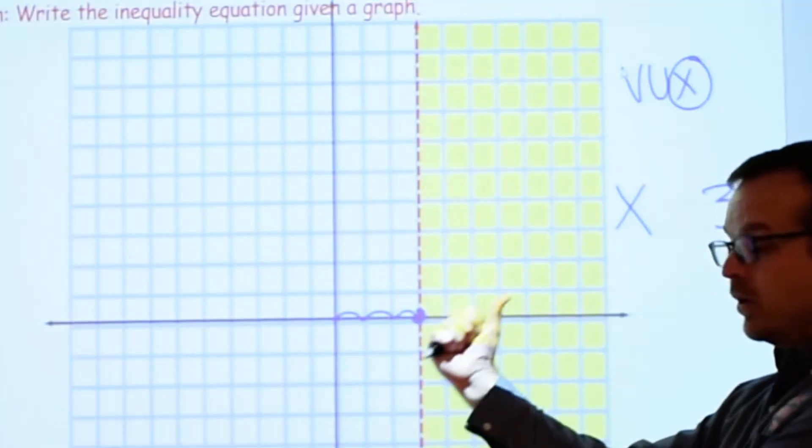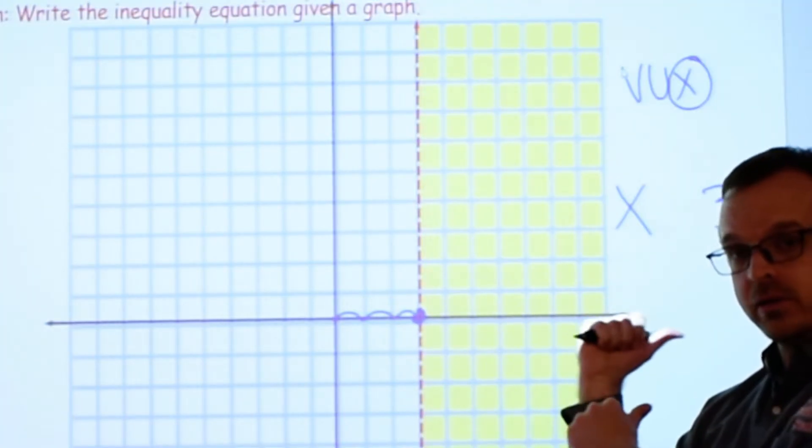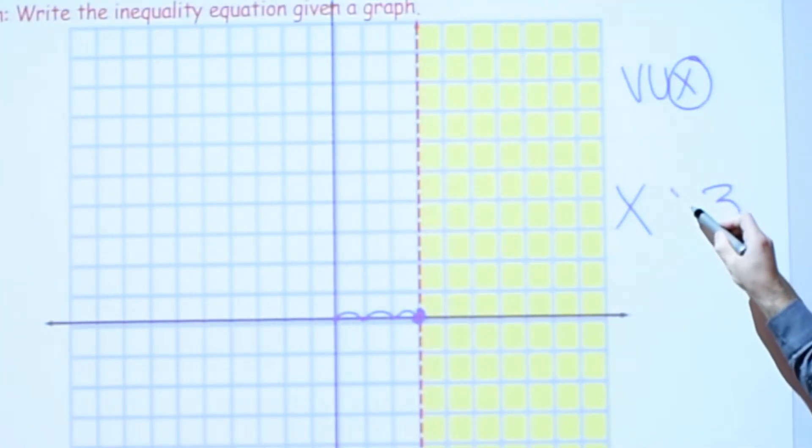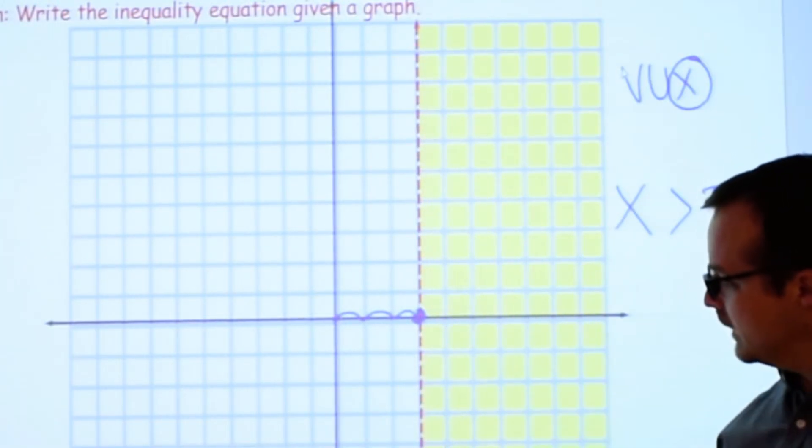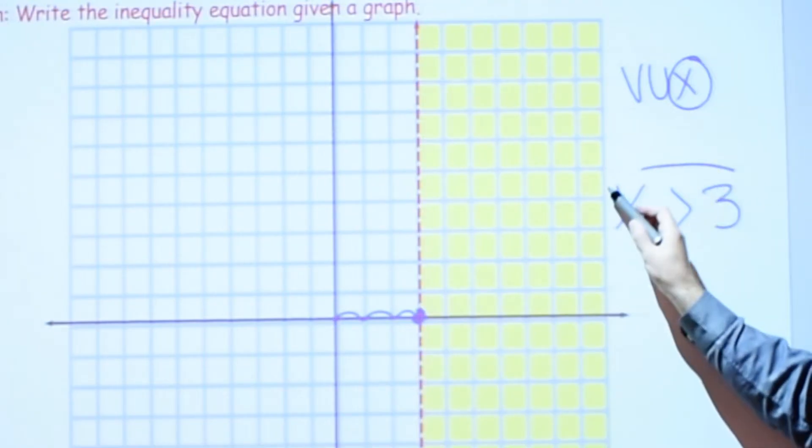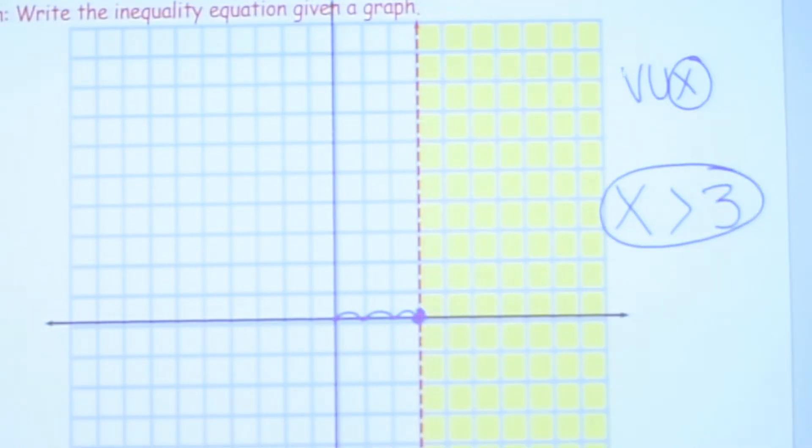It's shaded to the right and greater is to the right. So x is going to be greater. And it's not going to be equal to because it's just a dotted line. If this were a solid line, then it would get the equal to sign. So for this one, x is just greater than 3.